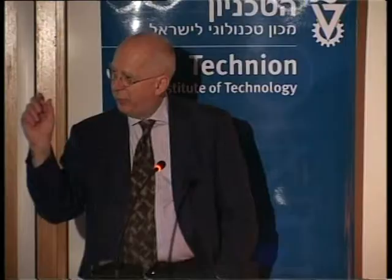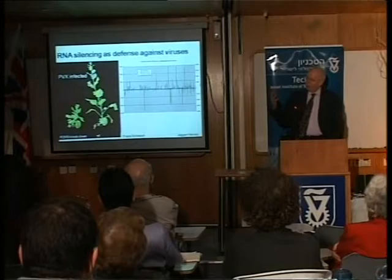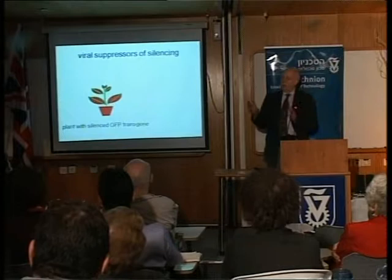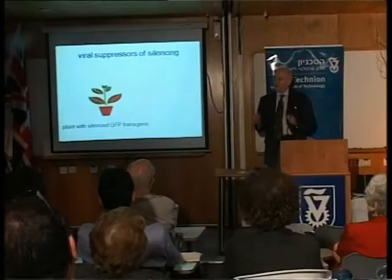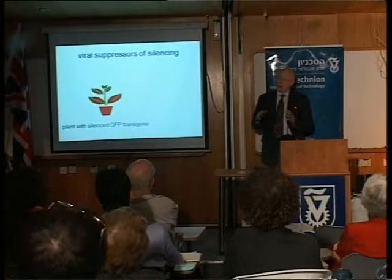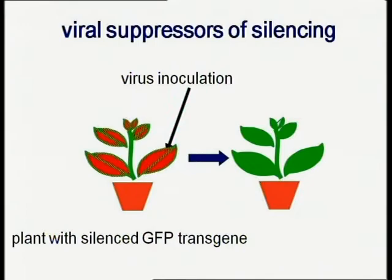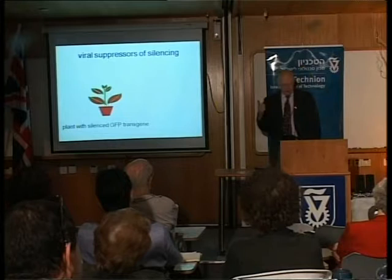If you look at small RNAs present in a virus-infected plant, you can find virus-specific small RNAs, so the viral RNA is feeding into the whole process. Sequence analysis of small RNA isolated from a virus-infected plant aligned to a viral genome shows many small RNAs from viral genomes. Even more compelling: if silencing is a defense mechanism against viruses, then you would expect viruses to evolve counter-defense. And indeed, that turns out to be the case.